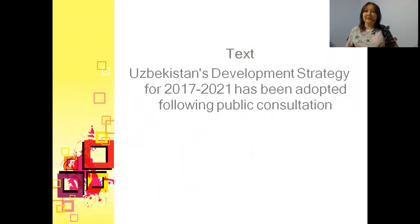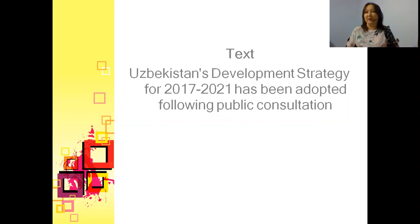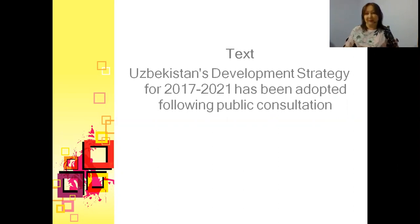This text is titled 'Uzbekistan Development Strategy for 2017–2021,' also called the Five Strategies. You are going to read it and then work on some tasks related to the strategies.